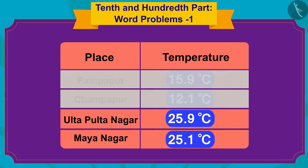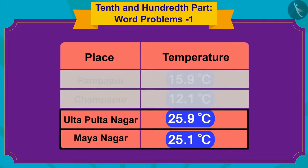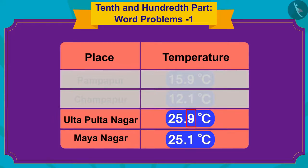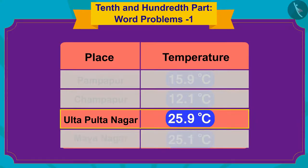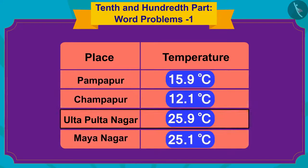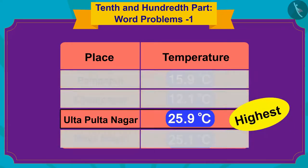Therefore, we will now compare the numbers written in the 10th places after the decimal point in the temperatures of these two places. The number in the 10th place in the temperature of Ulta Pulta Nagar is 9 and that in the 10th place of the temperature of Mayanagar is 1. Since 9 is more than 1, we can say that the temperature of Ulta Pulta Nagar is the highest among all these places.